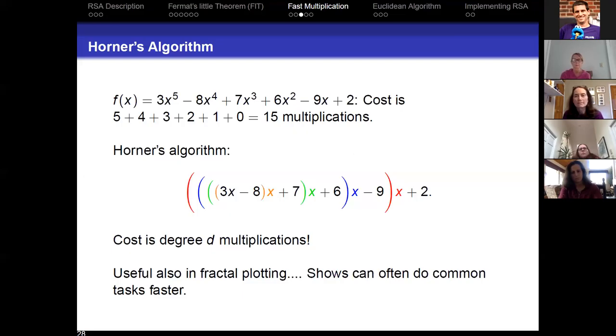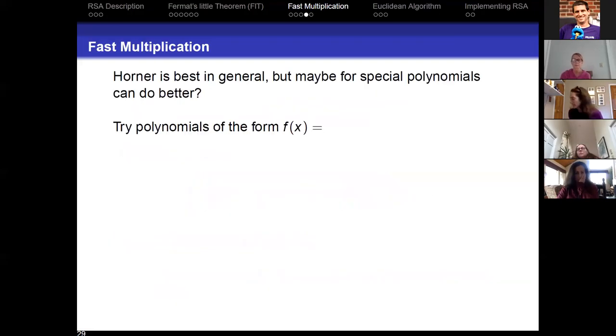Again, if we need to do something to the 10 to the 200 times, we can't do it. So can anybody give me a degree 5 polynomial that might be easier to work with than this one? What's the easiest degree 5 polynomial you can think of? X to the 5th. Excellent. X to the 5th. So we want to try special polynomials, and maybe for a special polynomial we can do better.